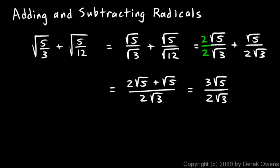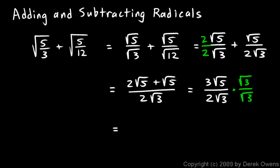That's not too bad, but there's a problem — we're not supposed to keep radicals in the denominator. So to get rid of that, I need to multiply by the square root of 3 over the square root of 3. The square root of 3 times square root of 3 on the bottom gives me 3. So I get this 3 up top, and square root of 5 times square root of 3 up top gives me square root of 15. On the bottom I have this 2, and square root of 3 times square root of 3 gives me 3. Now this 3 on top and this 3 on the bottom cancel.